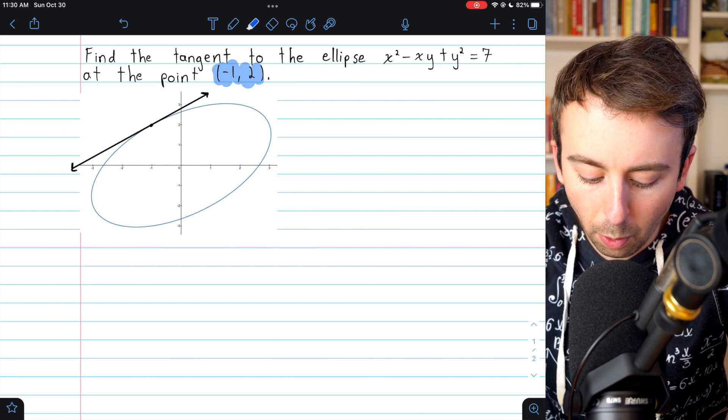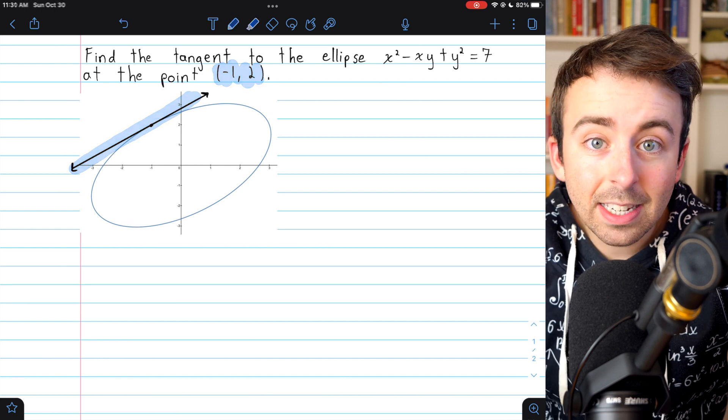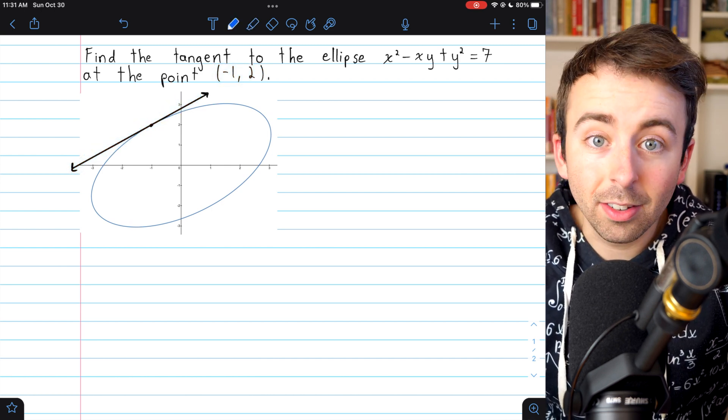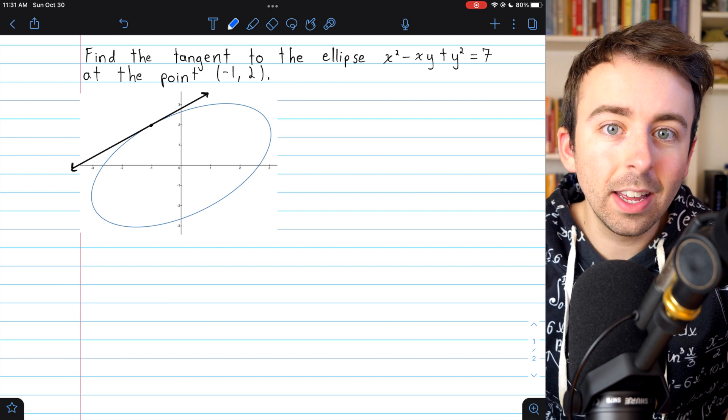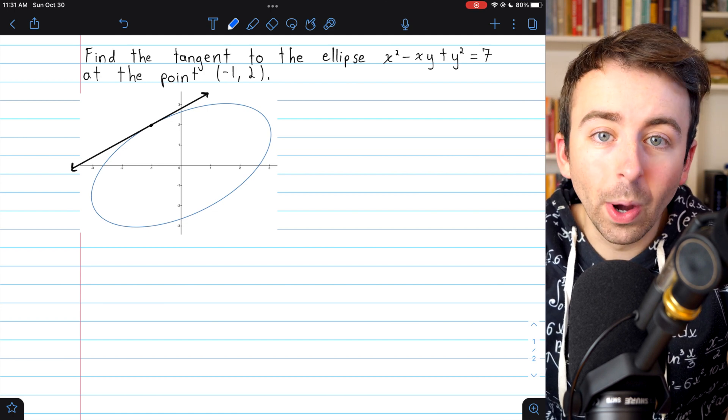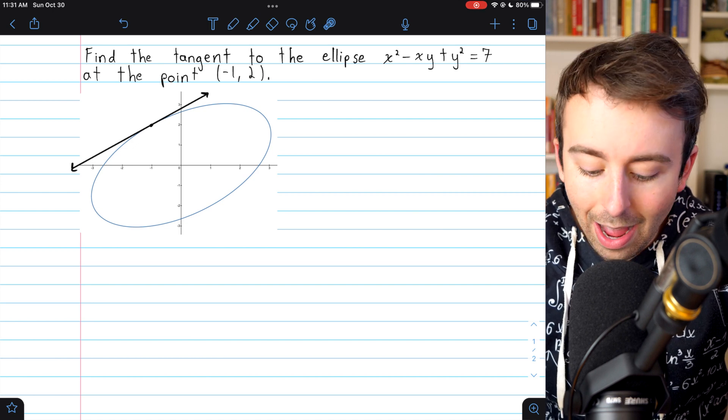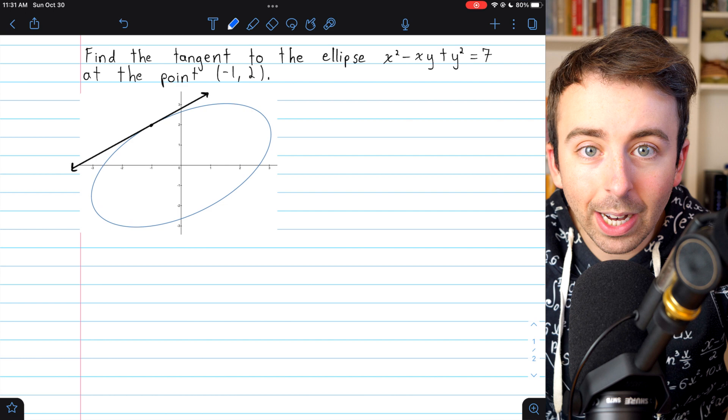And the tangent we're looking for looks something like that. Typically, to find a tangent line, we'd only be given an x-coordinate, and so we'd have to plug that into our function to figure out what the actual point of tangency is. So it's kind of nice in this case that we don't have to do that step since we already have the point.